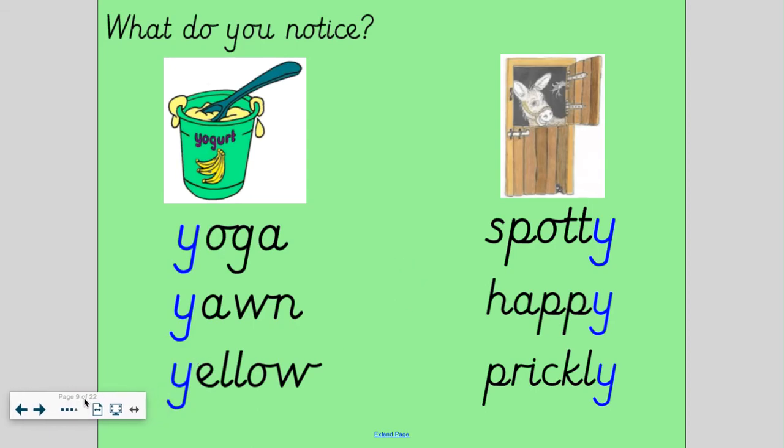Now, these are the words that we have read this morning so far. I have sorted them into the correct phonemes. The letter y over here makes the yu sound in words like yoga, yawn and yellow. The letter y on this side represents this phoneme, the ee sound, in words like spotty, happy and prickly. Take some time here. Do you notice anything about where the letter y is in the words? You might have noticed that when the letter y represents the yu sound, it's often at the end of the word. Now, remember this because it might help you with today's learning challenge.